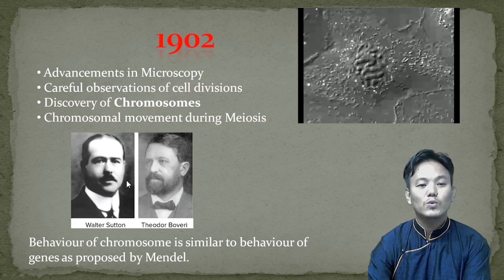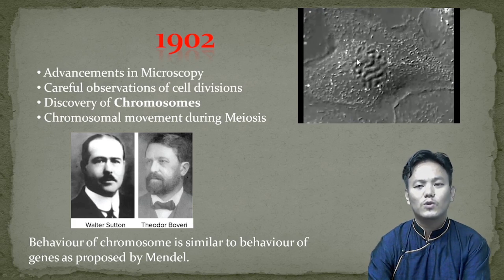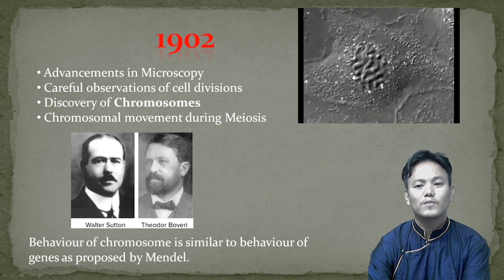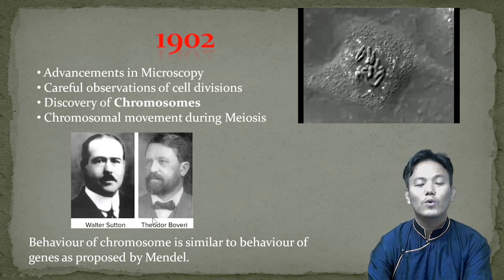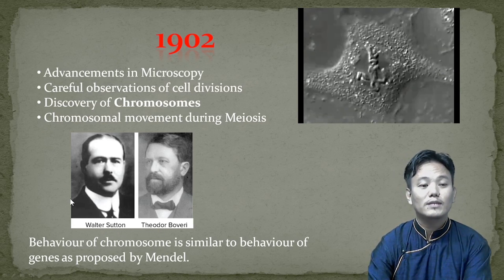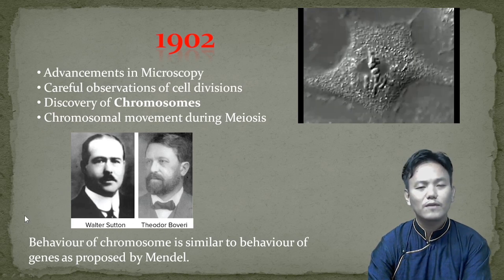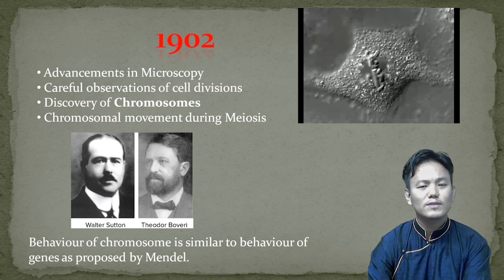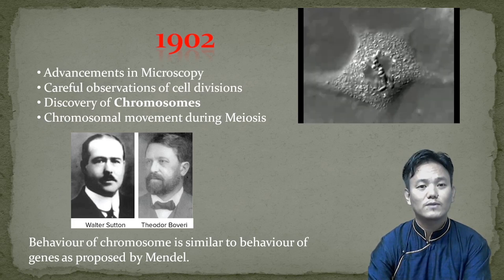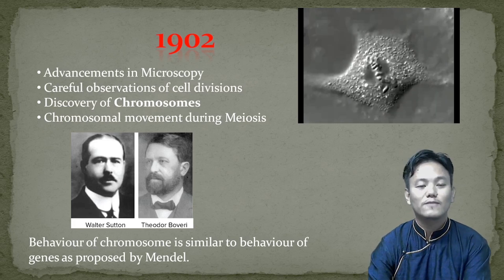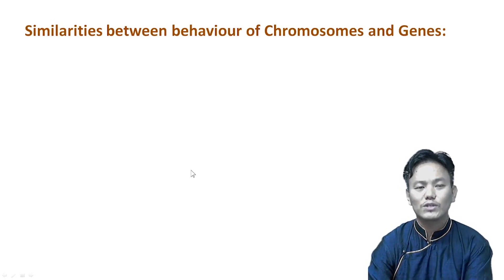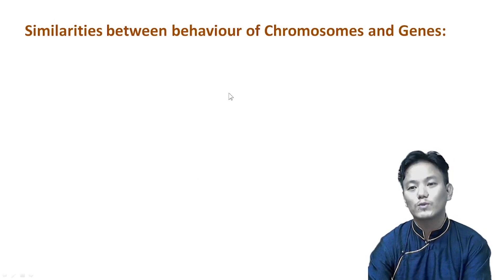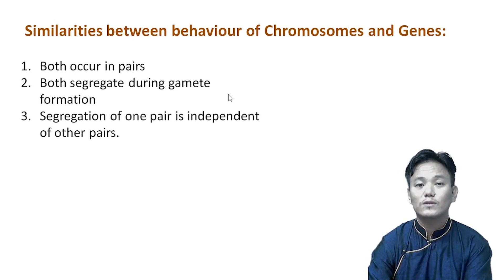After these discoveries were made, two important scientists — Walter Sutton and Theodore Boveri — observed that the behavior of the chromosomes is similar to the behavior of genes as proposed by Gregor Mendel. These two scientists came up with the idea that the behavior of the chromosomes is surprisingly very similar to the behavior of the so-called genes or factors proposed by Gregor Mendel back in 1865.